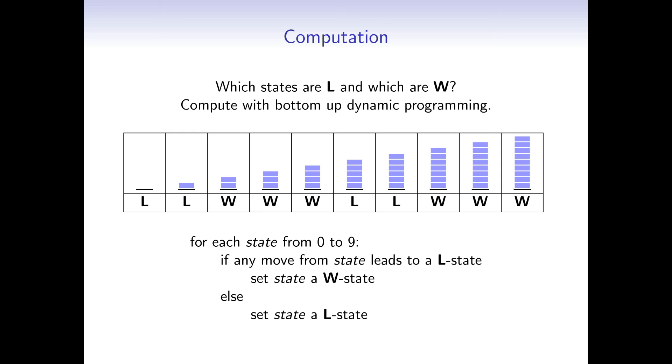So today you learned that there always exists an optimal strategy for impartial combinatorial games. And you can generate it by computing the winning and losing states of the game.